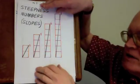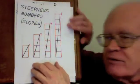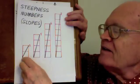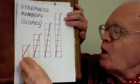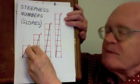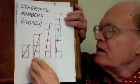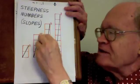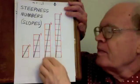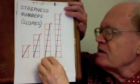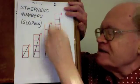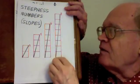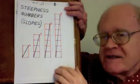This sheet illustrates steepness numbers 2, 4, 6, and 8. Here we have a line that goes over 1, up 2 — that's a steepness number of 2. Here we have another one that's steeper; it goes over 1, up 4 — that's a steepness number of 4. Here we have one yet steeper: over 1, up 6 — that's a steepness number of 6. And here we have over 1, up 8 — that's a steepness number of 8.